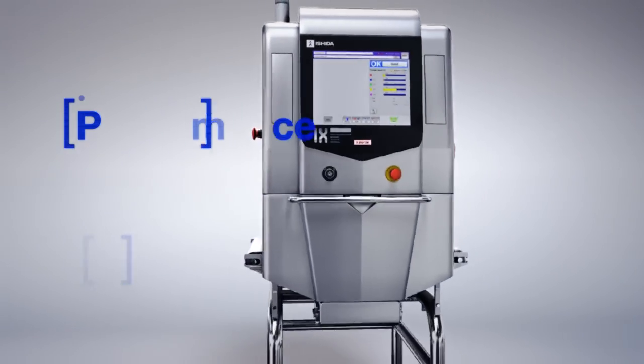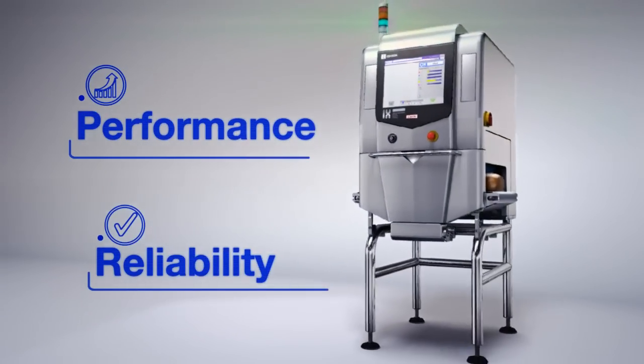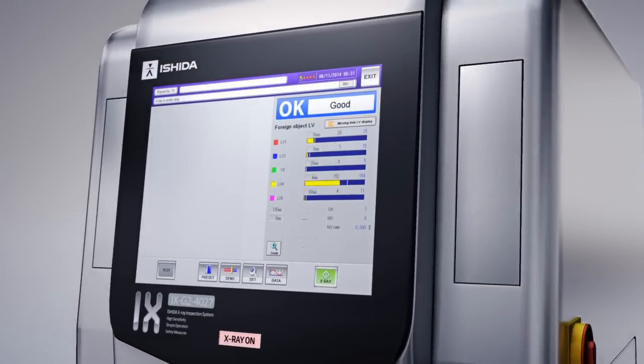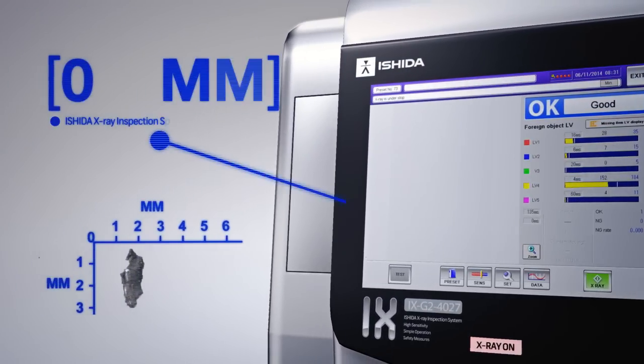Ishida X-Ray machines have unrivaled performance and reliability with detection of some foreign bodies that are as small as 0.4 millimeters.